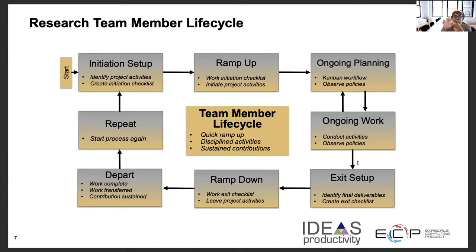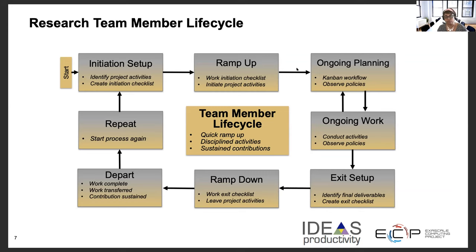This is a nice chart which shows a research team member's life cycle. It starts with an initiation or setup phase, then there is a ramp-up phase where the team member starts ramping up — the ramp-up time depends on how effective the ramp-up process is and how much experience the new team member has. The next phase is when they're actively working, shown in the ongoing work section, contributing and writing code. When they are ready to exit, there should always be a ramp-down path, especially for a student or postdoc where one has a good idea of when they are graduating. There's opportunity to train a replacement member, capture contributions, and once they exit and a new member joins, this research team member life cycle is repeated.